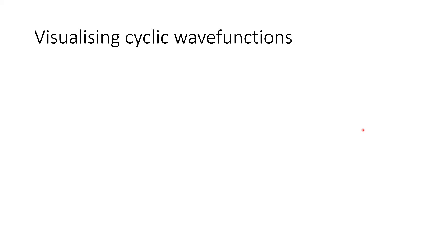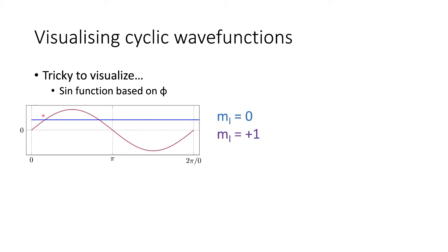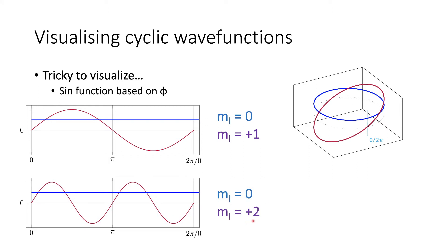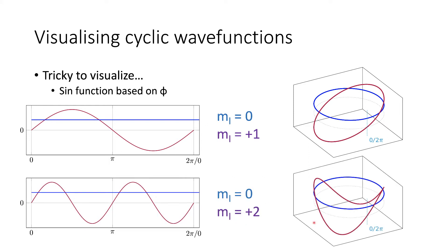Let's start visualising these cyclic wave functions — they can be quite tricky to visualise. We're fundamentally looking at a sine function based on our angle phi. For ml equals zero (the blue line) and ml equals plus one (the purple line), if we imagine taking that rectangle, cutting it out, and wrapping it around on itself, we see a wave function that looks like a wave wrapping around a cylinder. This gives us an idea of what these wave functions look like in three-dimensional space. Comparing to ml equals plus two, we end up with a different three-dimensional shape, corresponding to the probability distribution of finding the particle at a given point on the ring.